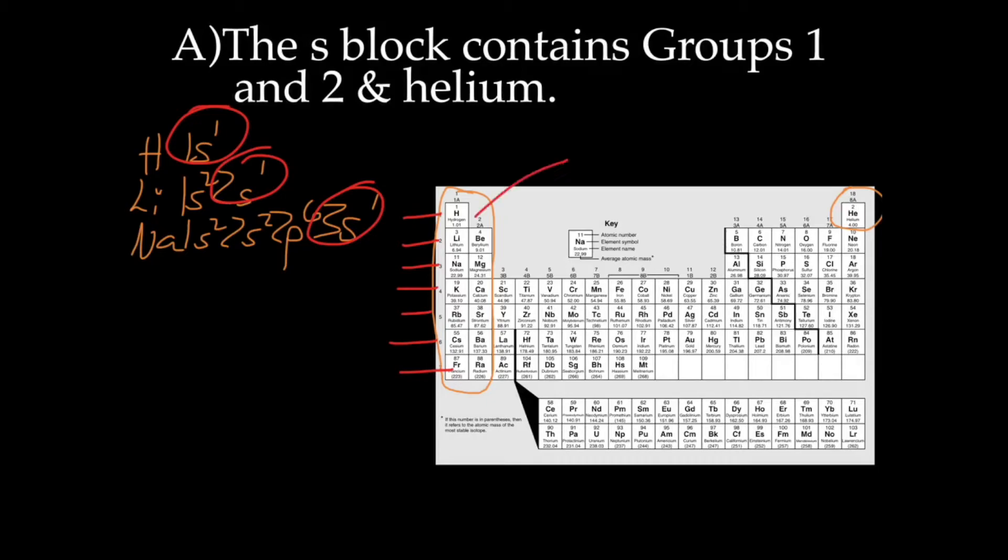If we now look at group 2, beryllium is 1s2... beryllium is not 1s2, I so lied to you. Let's try that again. Beryllium is 1s2, 2s2. Magnesium is 1s2, 2s2, 2p6, 3s2, and so forth.